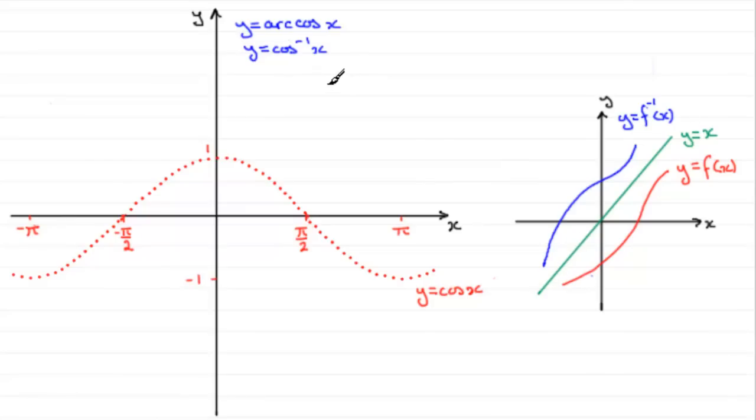So in order to get the inverse of cos x, all we've got to do is reflect the graph of y equals cos x in the line y equals x.